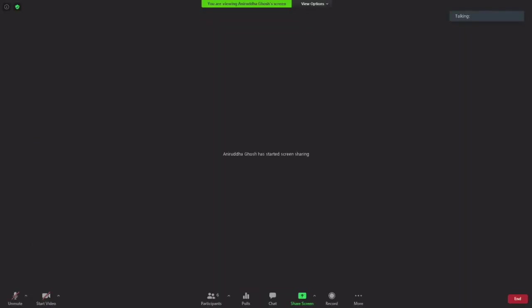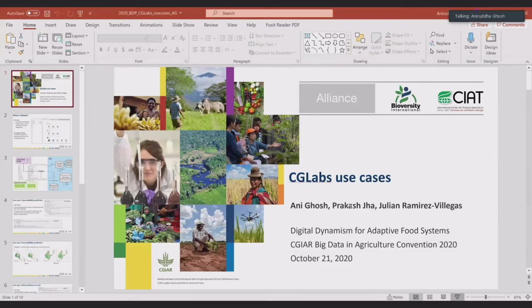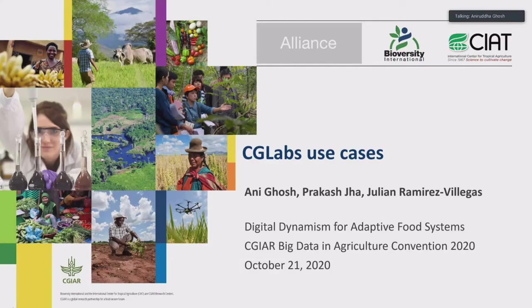Thank you Robert. My name is Ani Ghosh. I'm an agriculture risk data scientist with the Alliance of Bioversity and CIAT. I'm excited to present some of the work I've been doing with one of the components of the Guardian ecosystem that Maeda described — the data analytics component, specifically CG Labs: how we've been using CG Labs for some of our projects, how we set it up, how we collaborate efficiently across continents, and what kind of improvements we'd like to see in the CG Labs infrastructure. This is a team effort — some of the results I'll show came from colleagues Prakash and Julian, who are based in Cali, while I'm based in Nairobi.